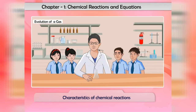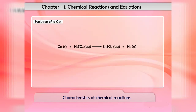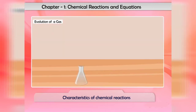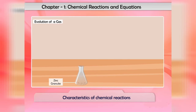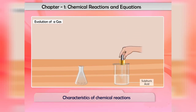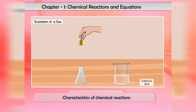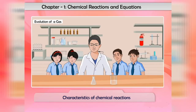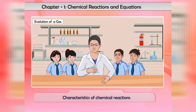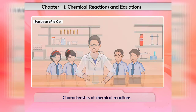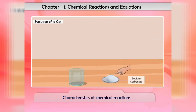Evolution of a gas: we can characterize some chemical reactions by the evolution of a gas. For example, when zinc granules react with dilute sulfuric acid, bubbles of hydrogen gas are produced. When dilute hydrochloric acid is poured over sodium carbonate in a beaker, carbon dioxide gas is evolved.